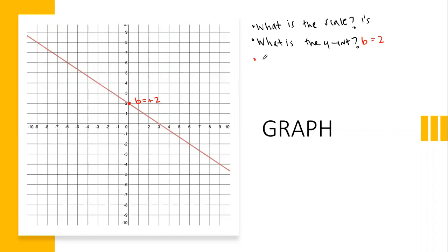Is my slope positive or negative? How do I know it's negative? Because this line is going down from left to right, so I know my slope is negative something. I don't know what that something is — it's some rise over run. How do I figure out my rise over run? I could do it a long way, but I'll show both ways. You can take two points on the graph and connect them — work out the rise over run.